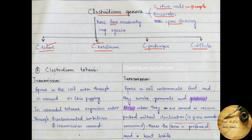Coming towards the transmission of Clostridium tetani, the spores are present in soil which enter the skin through wound or through skin popping. What is skin popping? It is a technique by which drug addicts inject drugs into the skin. In neonates, the Clostridium tetani enter through the contaminated umbilicus or through the circumcision wound.